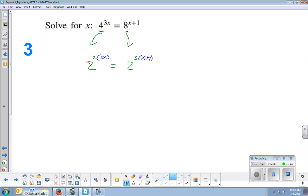And then I can ignore these bases of 2. And so I'm going to multiply this. 2 times 3x is 6x. And I'm going to multiply this, which requires some distribution. Don't forget to distribute if you have to. And you get 3x plus 3. And it looks like I'm going to end up with 1 again. Subtract 3x. Divide. x equals 1 again.